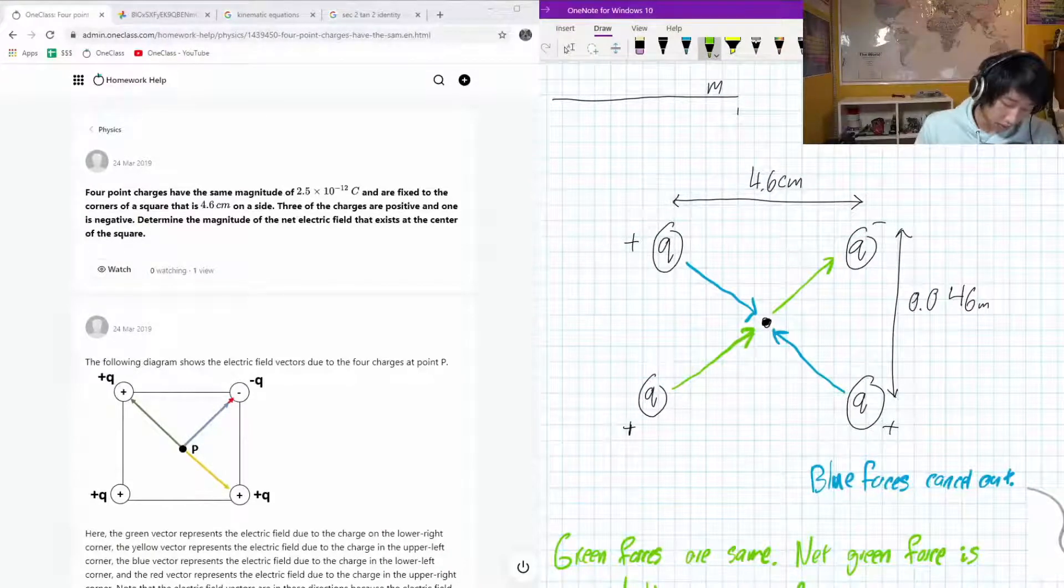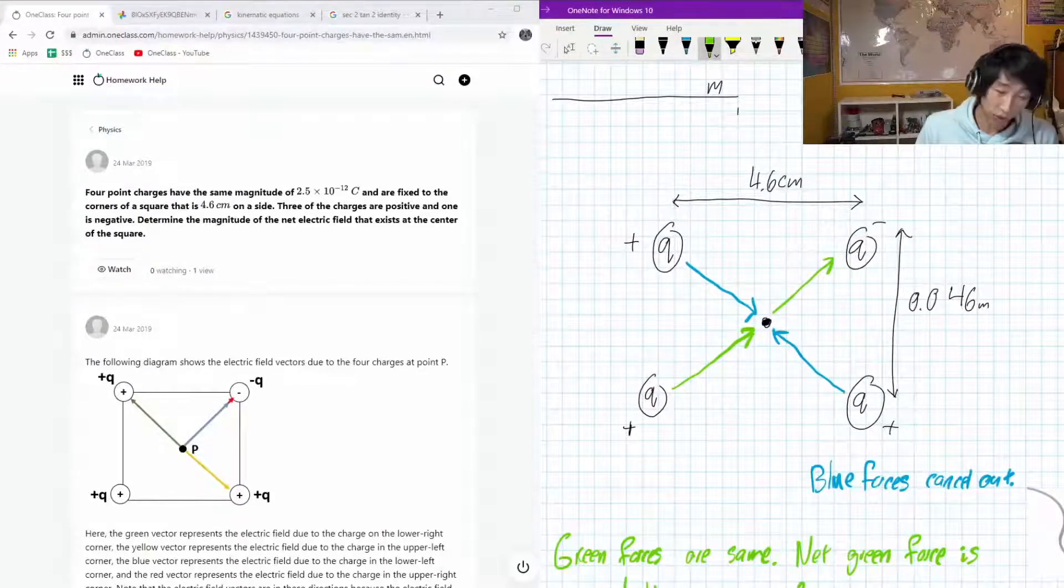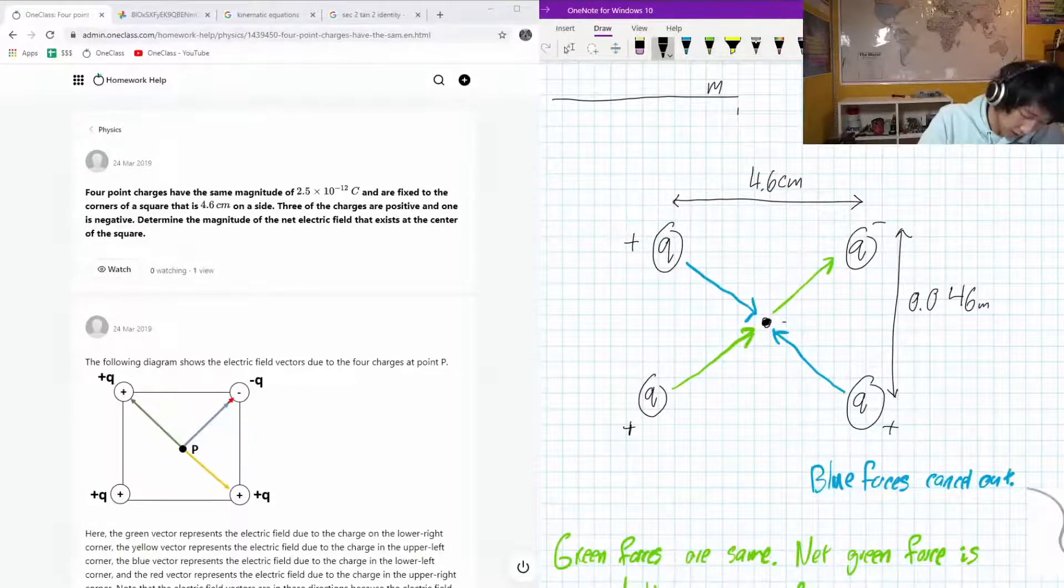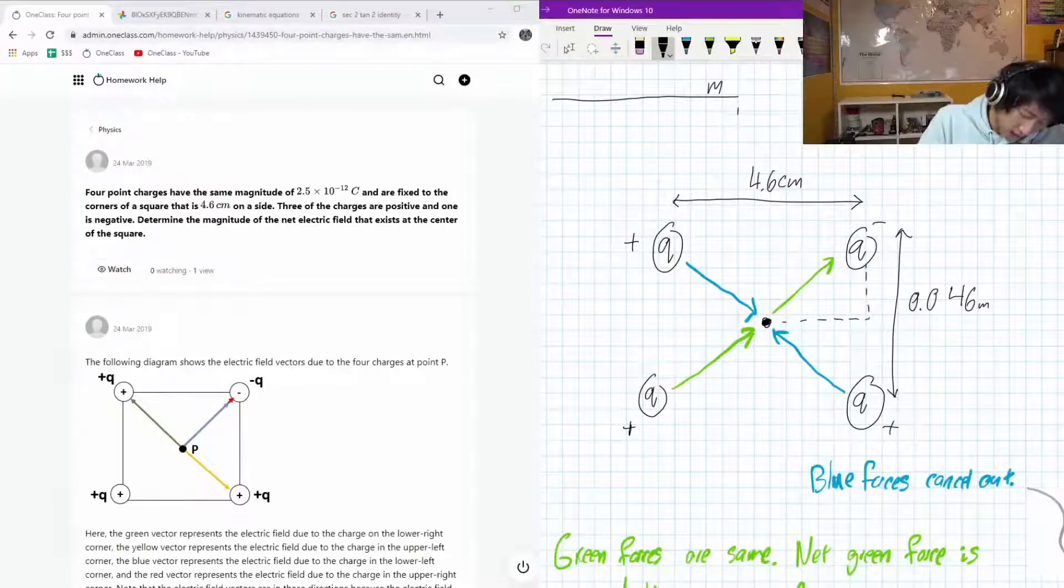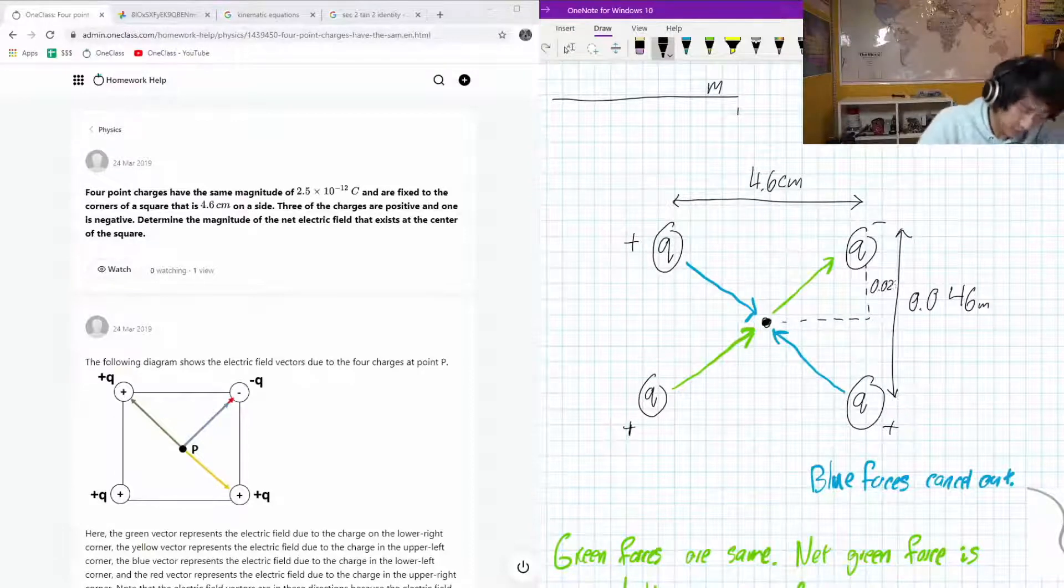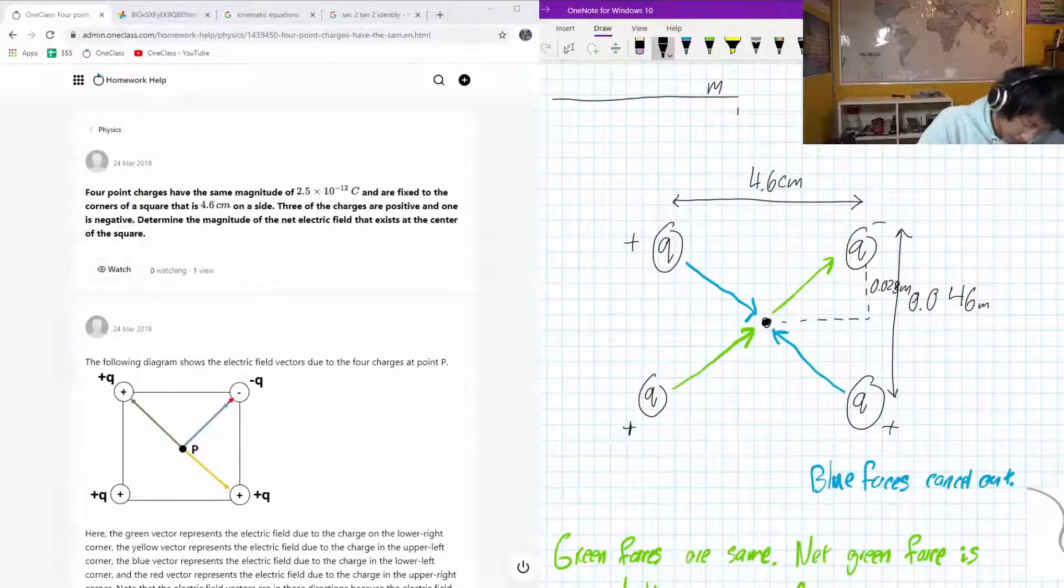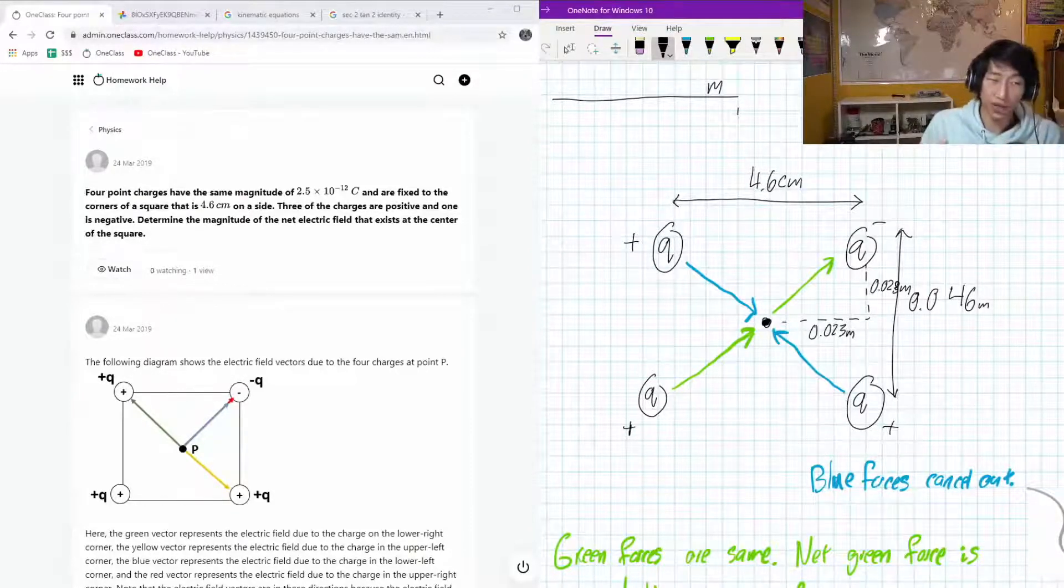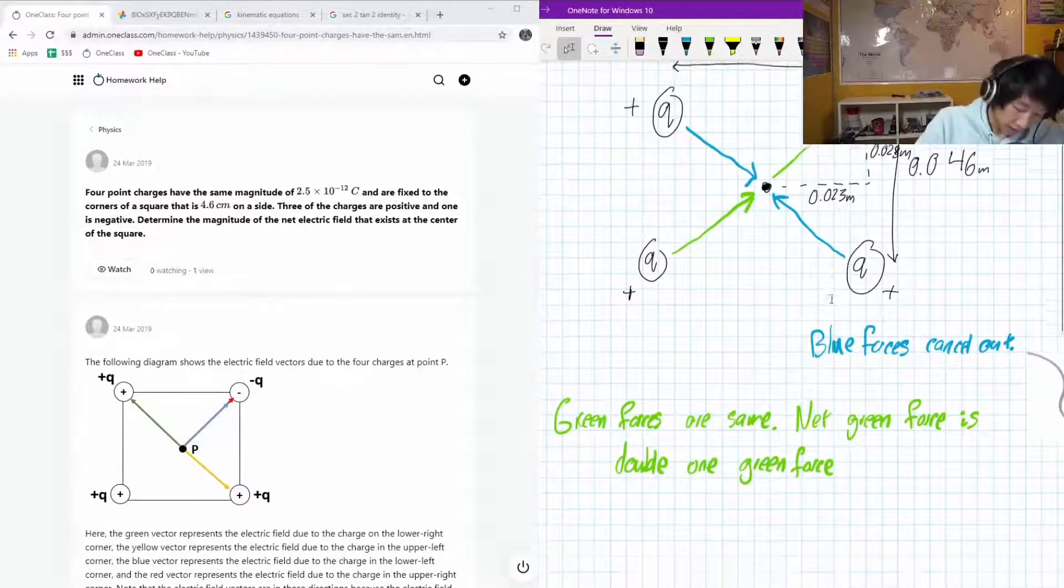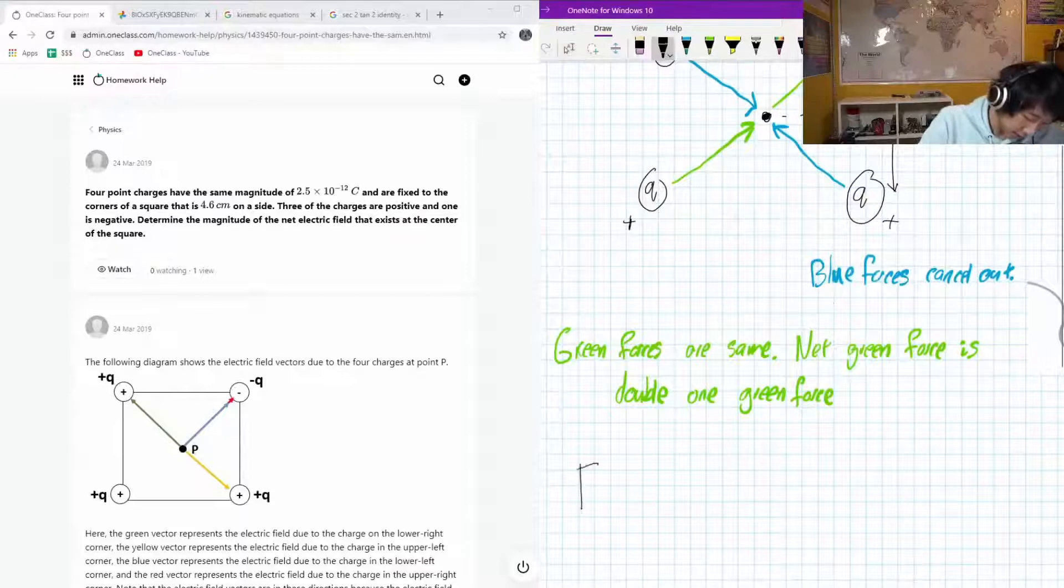Okay, cool. So to determine what the green force is, we're going to first need to do some trigonometry, because right here you can see that this is going to be 0.023 meters. And this is also going to be 0.023 meters, just because it's halfway for the square. We're going to need the hypotenuse.